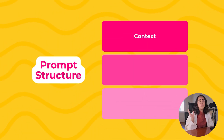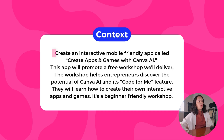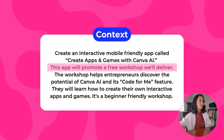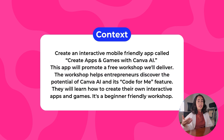Let me come back to the prompt structure. This is the first section — the context. We want to provide context and explain what we want to create and what it is about. I'm explaining that I want to create an interactive mobile-friendly app. Then I explain the reason this app is going to exist — it will promote a free workshop that helps entrepreneurs discover the potential of Canva AI. The more context you provide, the better copy the AI will craft for you.